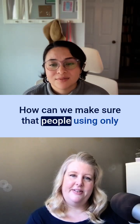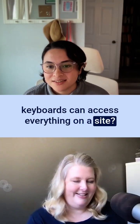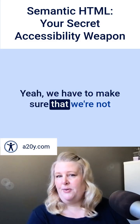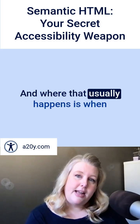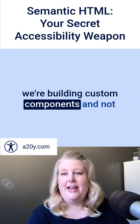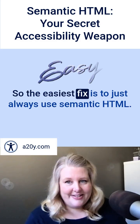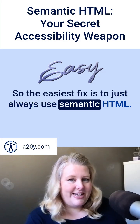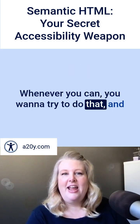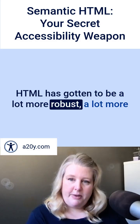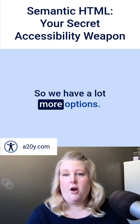How can we make sure that people using only keyboards can access everything on a site? We have to make sure that we're not building anything that only works with a mouse. And where that usually happens is when we're building custom components and not using semantic HTML. So the easiest fix is to just always use semantic HTML whenever you can. HTML has gotten to be a lot more robust and powerful than it used to be, so we have a lot more options.